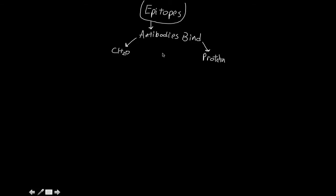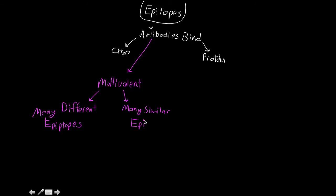We have multivalent antigens, and there are two ways: ones that have many different epitopes, many different parts on the surface that antibodies can bind to, and ones that have many of the same or similar epitopes.